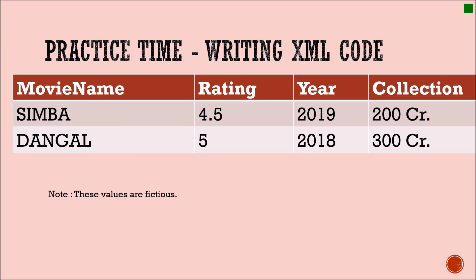Now you have learned how to connect an XML file with a CSS file. For practice, write XML code for two records where movie name, rating, year, and collection are the field names. All the best!